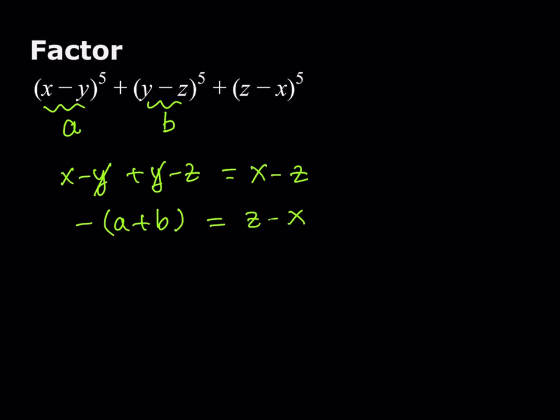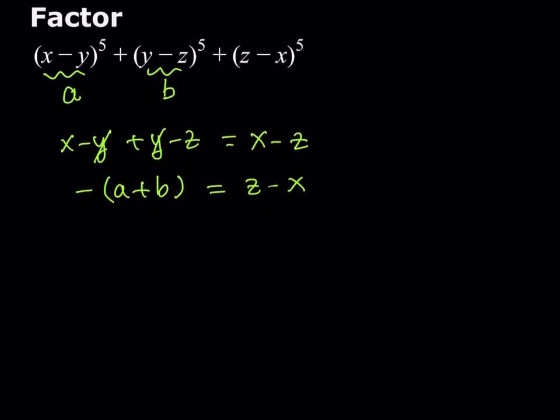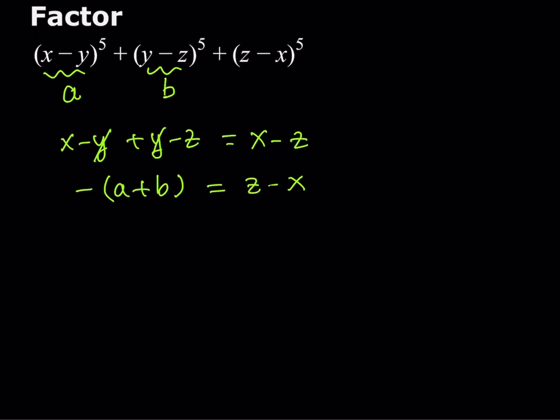Those are my new variables, and of course, I'm going to back substitute at the end, but let's proceed with this information now. This gives me a nicer expression. I get a to the fifth power plus b to the fifth power, and my expression is going to be negative of a plus b.